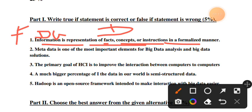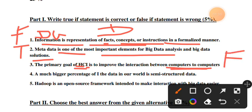Number two: Metadata is one of the most important elements for big data analysis and big data solutions. Metadata is data about data. Number three: The primary goal of HCI, human-computer interaction, is to improve the interaction between computers to computers. This is false - it should be human to computer interaction.